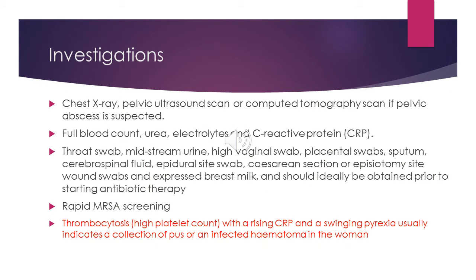Investigations in sepsis include general investigations: blood cultures before antibiotics, full blood count, urea and electrolytes, and C-reactive protein. Specific investigations depend on the history and examination to identify the source of infection: chest X-ray, pelvic ultrasound scan, CT scan if pelvic abscess is suspected, throat swab, midstream urine, high vaginal swab, placental swab, sputum, cerebrospinal fluid, epidural site swab, cesarean section or episiotomy wound swab, and expressed breast milk. Note that thrombocytopenia, rising CRP, and swinging pyrexia usually indicate a collection of pus or an infected hematoma.